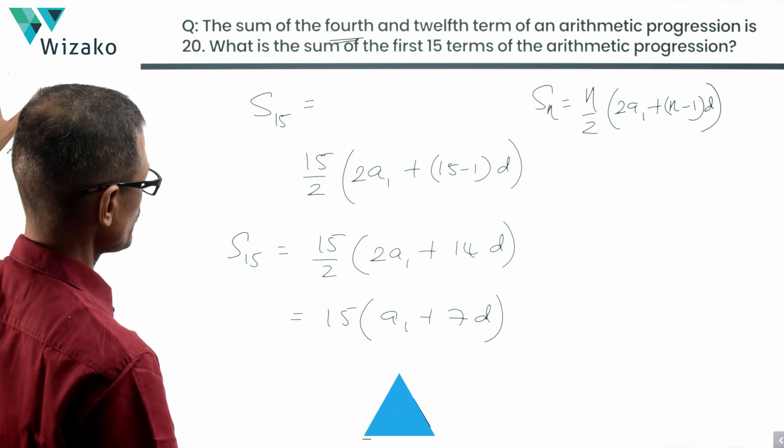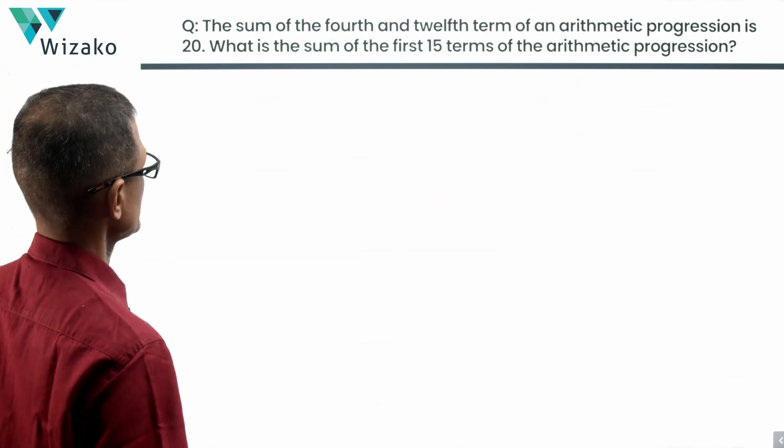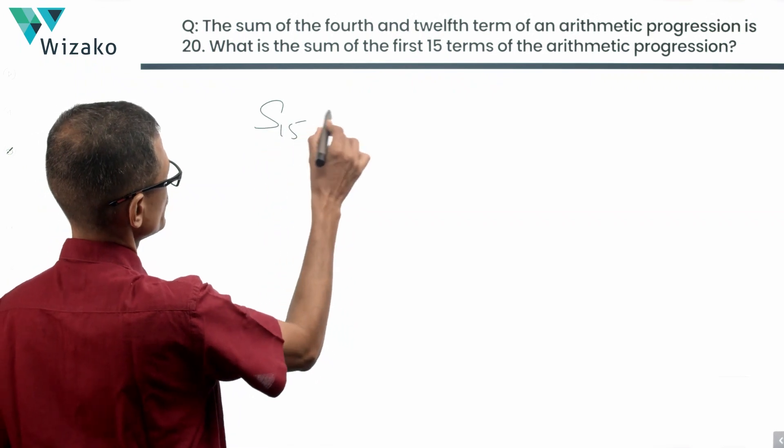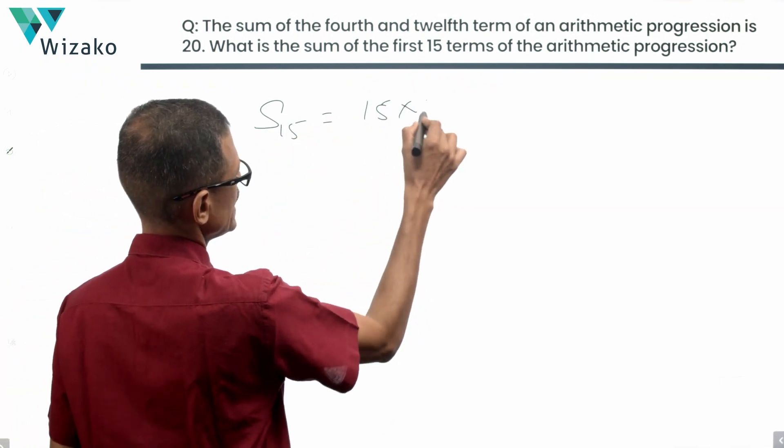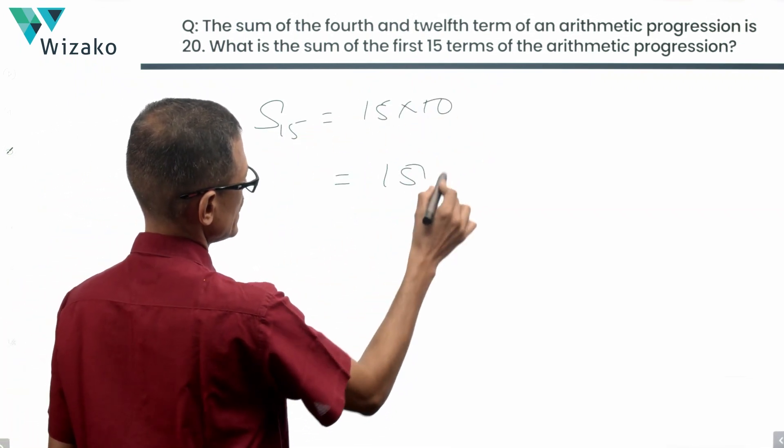So 15 times A1 plus 7D is the sum. A1 plus 7D is equal to 10. So sum of the first 15 terms is equal to 15 into 10, which is equal to 150.